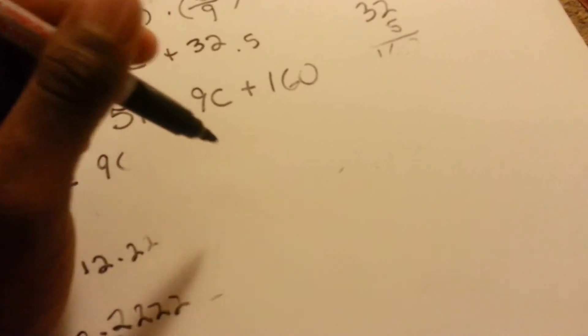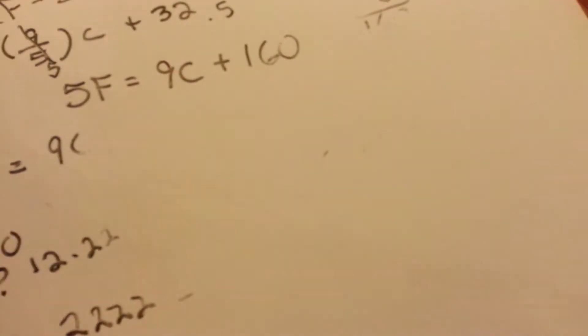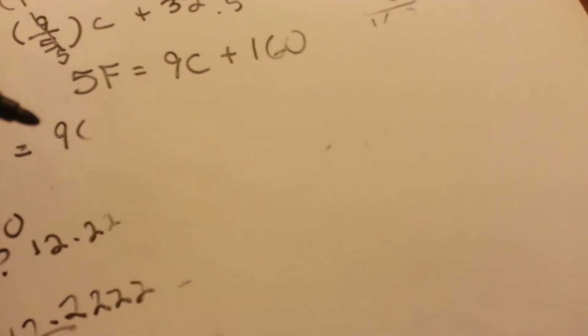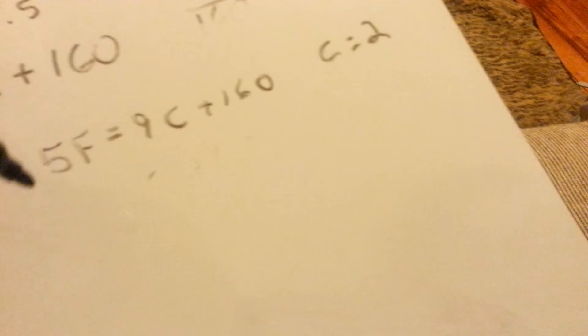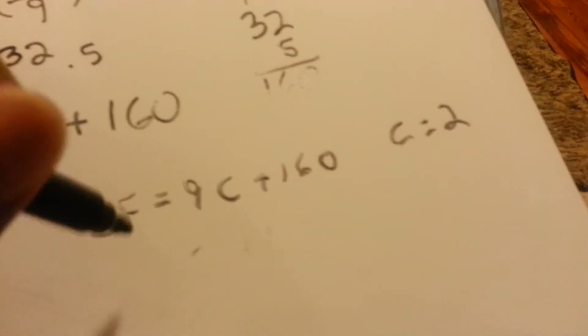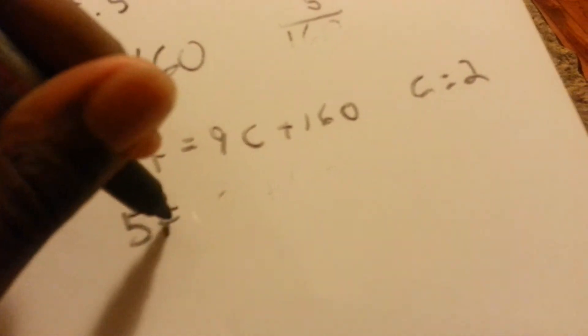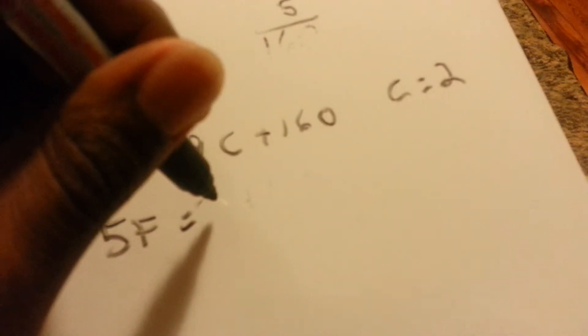Just another quick example. Let's say, give me a number. Give me a number, Nehemiah. Two. Okay, I got degrees Celsius. We'll do it the other way. So, 5F equals 9C plus 160. We have degrees C equals 2. And we want to find out how many degrees Fahrenheit that is. You plug in the 2 for C. 9 times 2 plus 160.